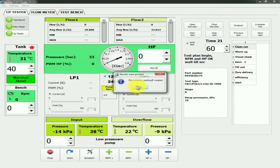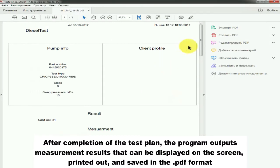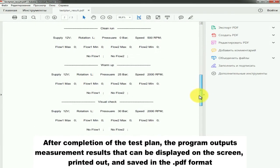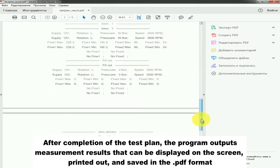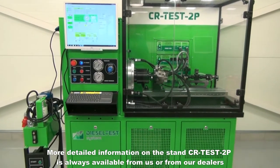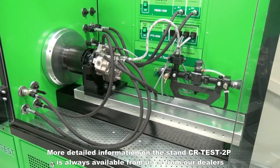After completion of the test plan, the program outputs measurement results that can be displayed on the screen, printed out, and saved in PDF format. More detailed information on the stand CR Test 2P is always available from us or from our dealers.